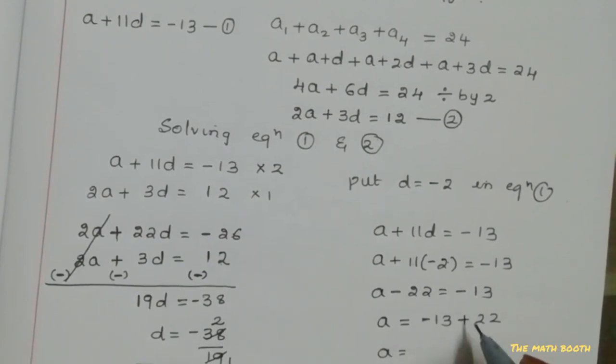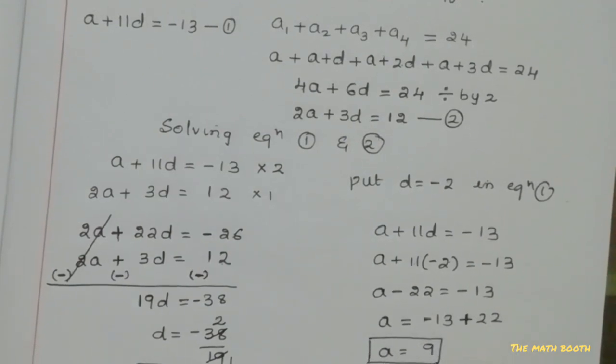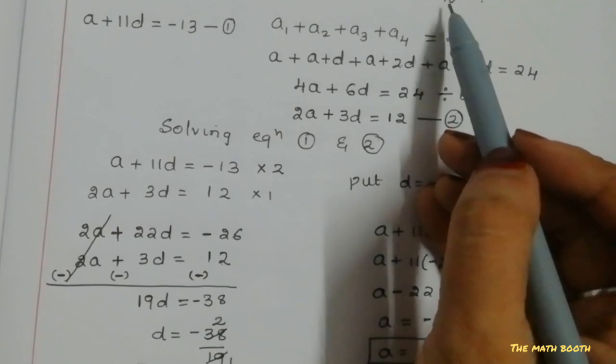If we bring this side it becomes plus 22, so a equals minus and plus is nothing but minus. 22 - 13 is 9, so bigger number sign is plus. We got a value. We know that in AP we should always find a and d value. Here we got d value, then we got a value. What they have told to find? We have to find S₁₀, sum of 10th term.